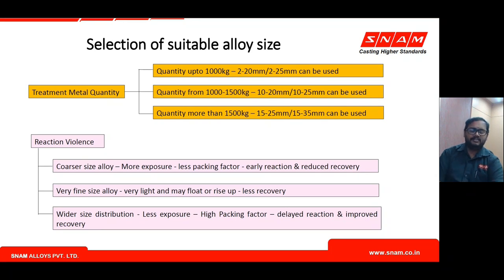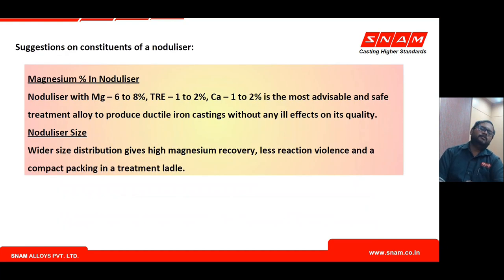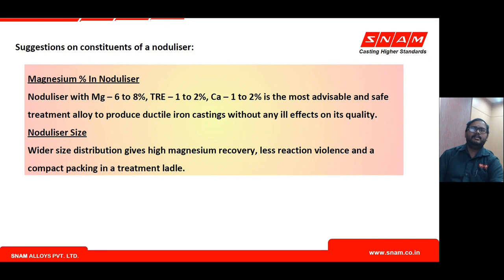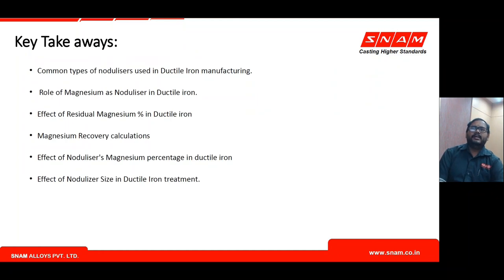The ideal nodulizer recommendation for a foundry is: 6–8% magnesium, 1–2% rare earth, 1–2% calcium — the most advisable and safe treatment alloy for producing various casting section thicknesses under varying foundry conditions. Magnesium content need not go above 6–8%; any process variations can be handled by adjusting the alloy or supplementary elements such as calcium and rare earth. A wider size distribution always helps in achieving maximum magnesium recovery for the given alloy.